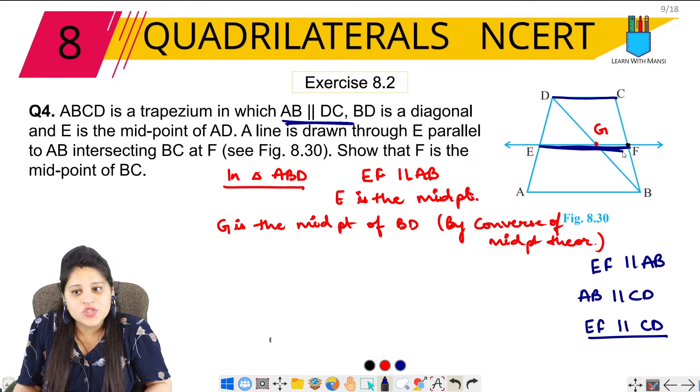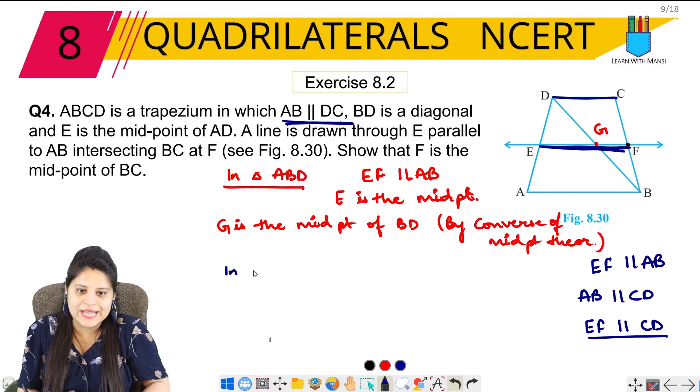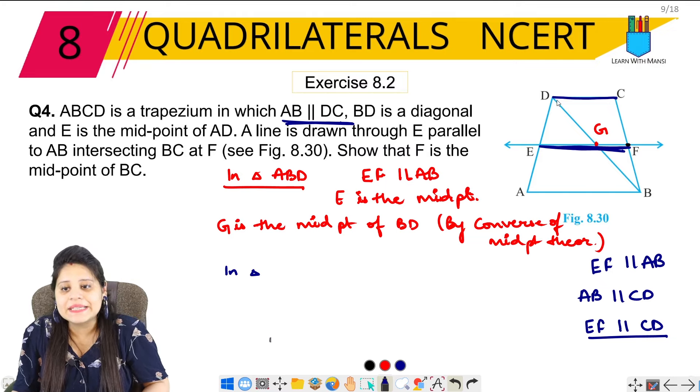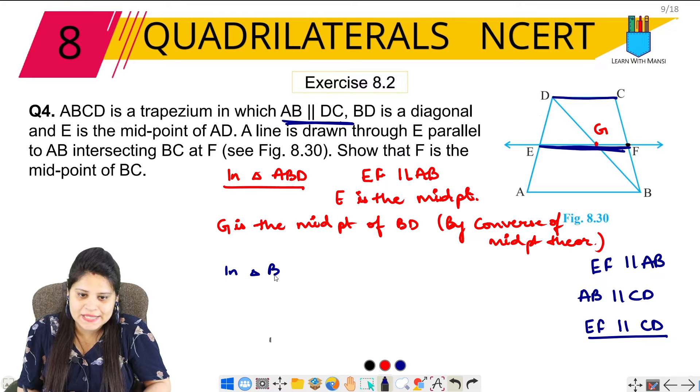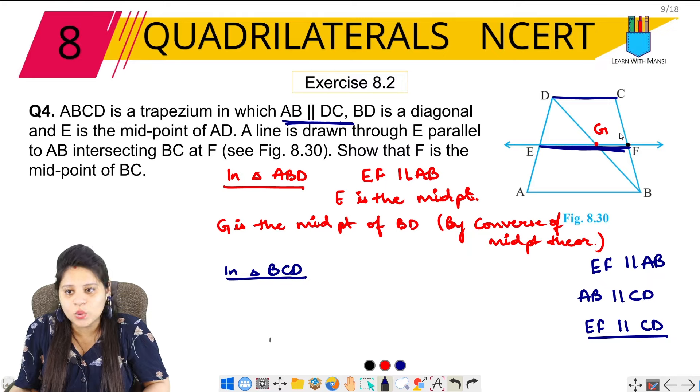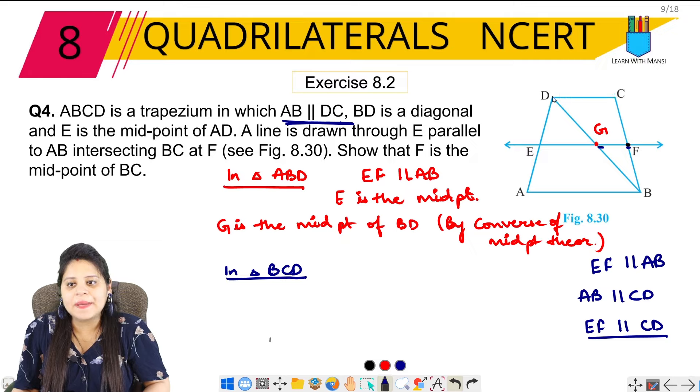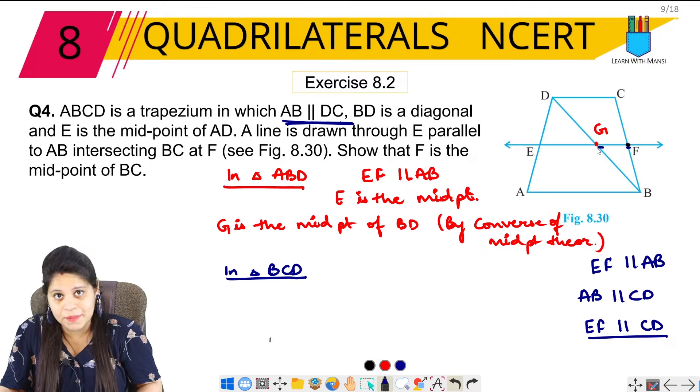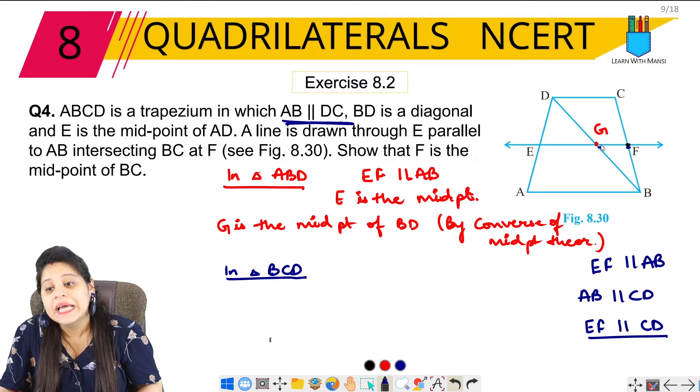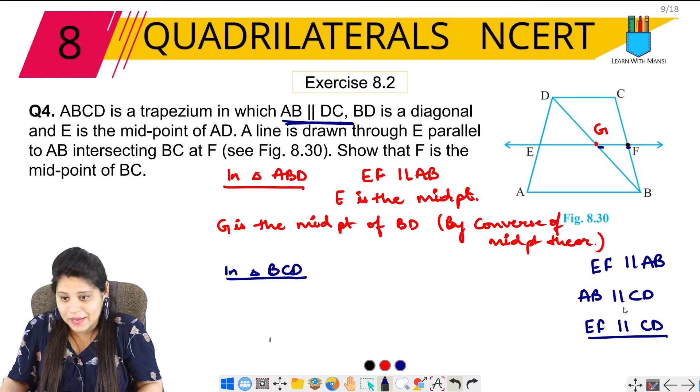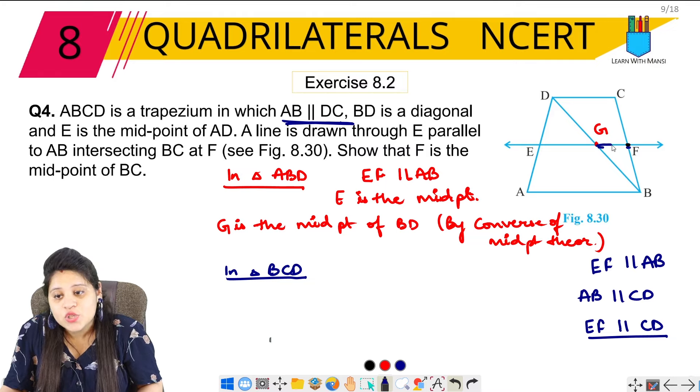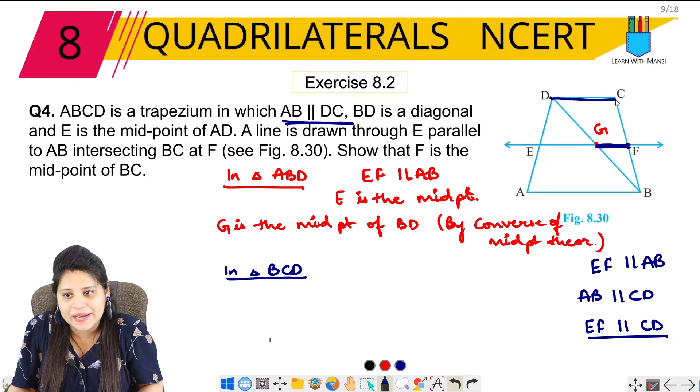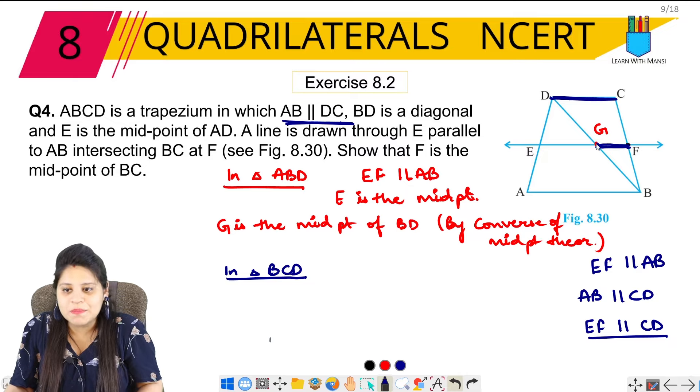So here now the other triangle will be triangle BCD. If I talk about BCD triangle, G is the midpoint I have proved, and this line is parallel I know. I have proved it. So if this line is parallel and G is midpoint...